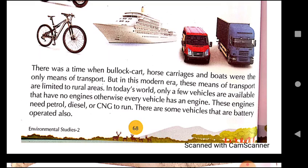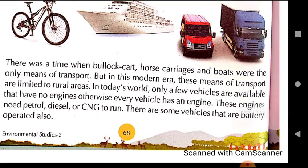There was a time when bullock cart, horse carriages and boats were the only means of transport. But in this modern era, these means of transport are limited to rural areas. In today's world, only a few vehicles are available that have no engine. Otherwise every vehicle has an engine. In olden times, people used to travel from one place to another, and goods were carried by bullock cart or horse carriages.